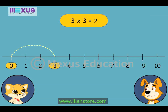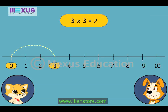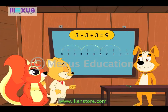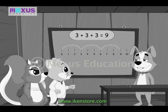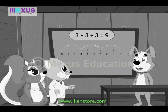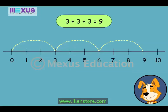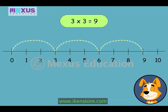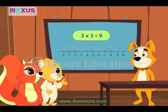This arc has jumped from 0 to 3. This arc has jumped from 3 to 6. This arc has jumped from 6 to 9. When 3 is multiplied by 3, the answer is 9. It's like adding 3 to itself 3 times. The arcs have jumped all the way from 0 to 9 in steps of 3 each. This is like saying 3 times 3 is equal to 9. That makes it so easy!